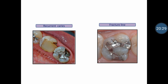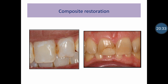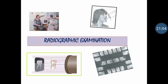For composite restoration evaluation, similar to amalgam, we check for recurrent caries, discoloration of margins, improper contacts and contours, and overhanging restorations. After evaluating all these factors, if possible, the composite restoration can be repaired or recontoured; if not, it should be replaced with a newer restoration. This concludes the first part of clinical diagnosis of caries, covering clinical examination of teeth and restorations. In the next part, we will learn about radiographic examination used for diagnosis of caries.